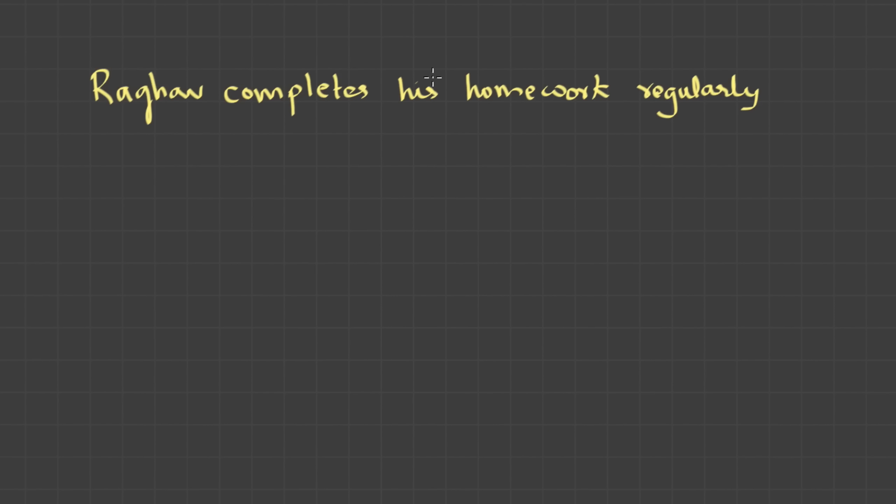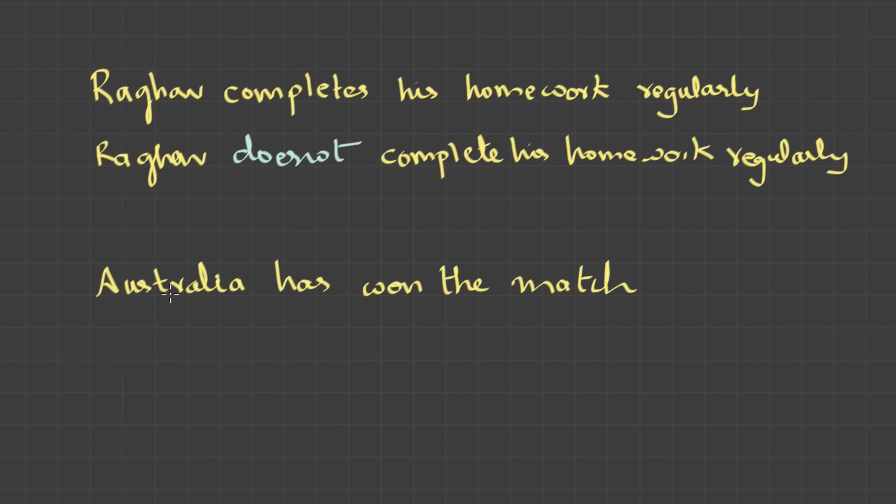Alright. I assume that you have picked up the concept on propositions. If the statement is simple, there's nothing much to do about it. We can either find its TRUTH VALUE that's either TRUE or FALSE or maybe we can negate the statement. Something like, it's an apple. If I negate it, it's not an apple. Let's take one more. Raghav completes his homework regularly. And if I negate it, Raghav doesn't complete his homework regularly. Australia has won the match. And if I negate it, Australia did not win the match. If you have observed, English is tricky. We use different words like not, does not, could not, etc. to convey the same meaning.